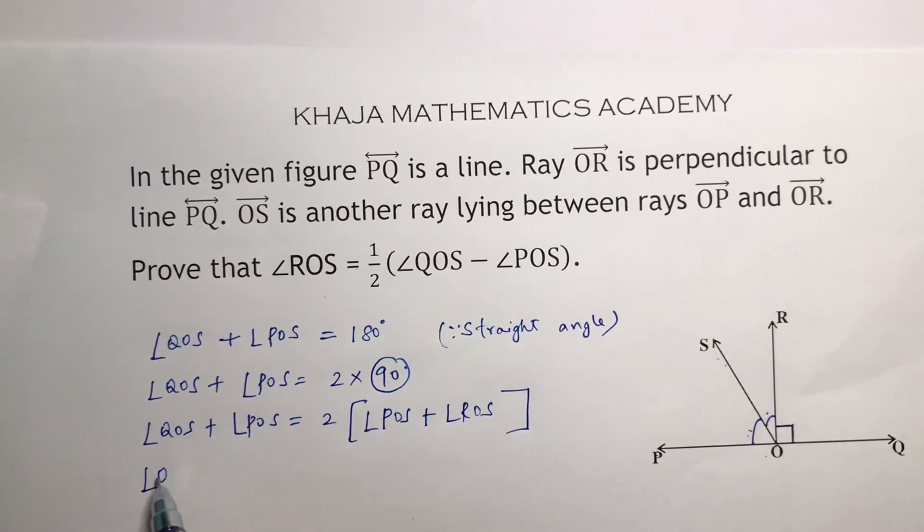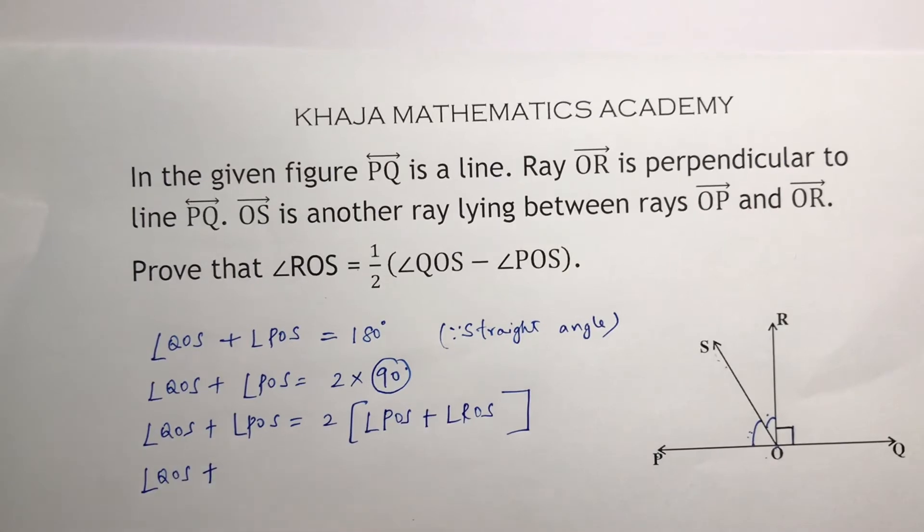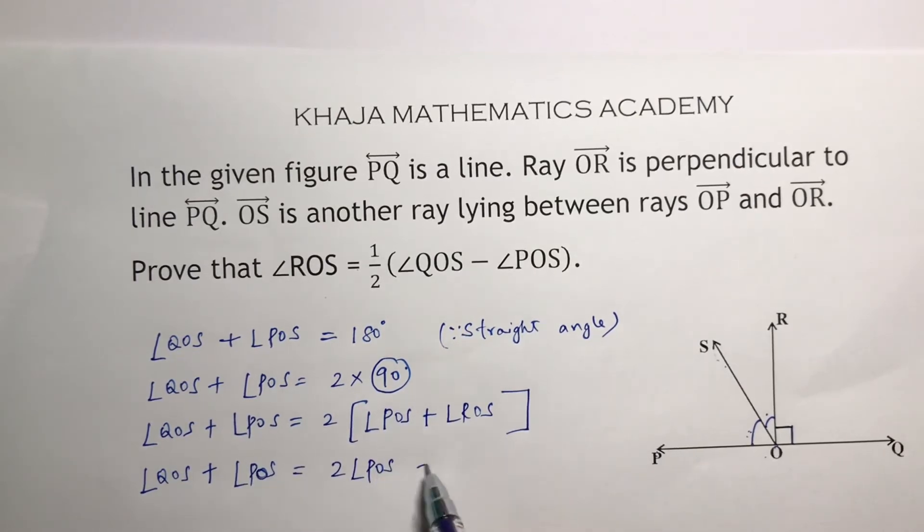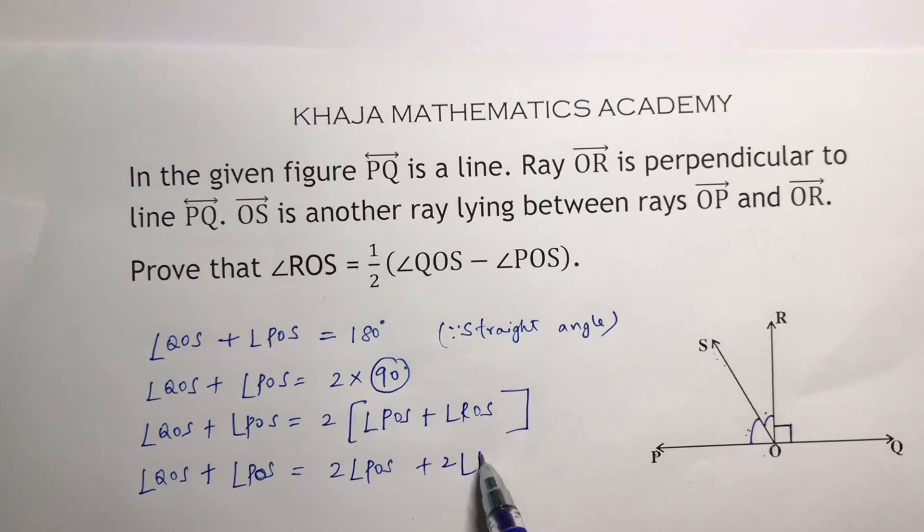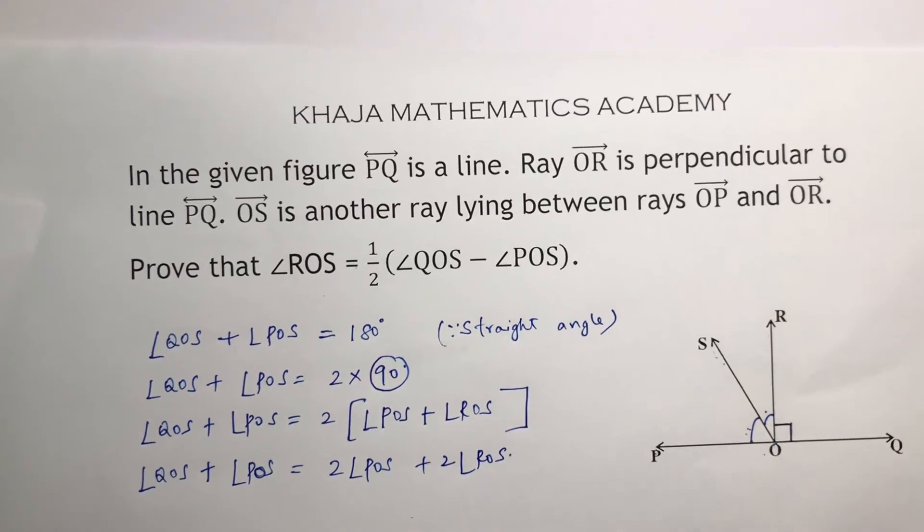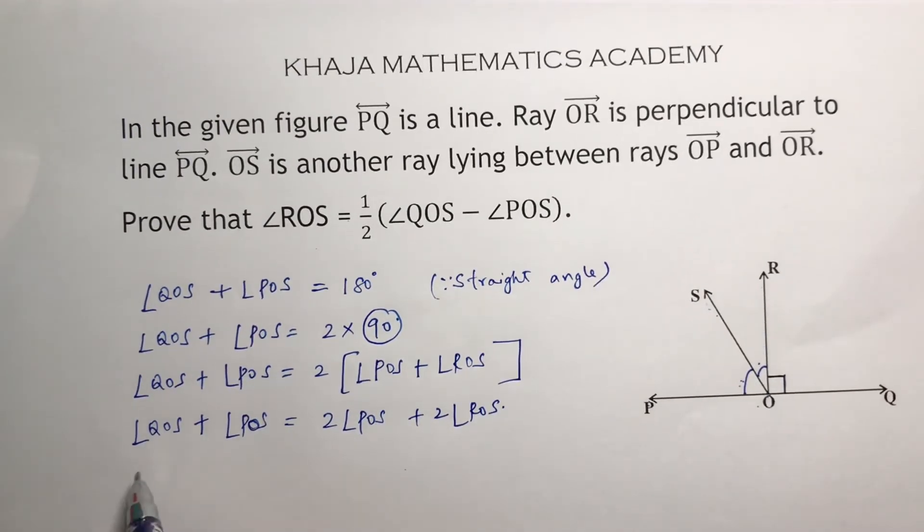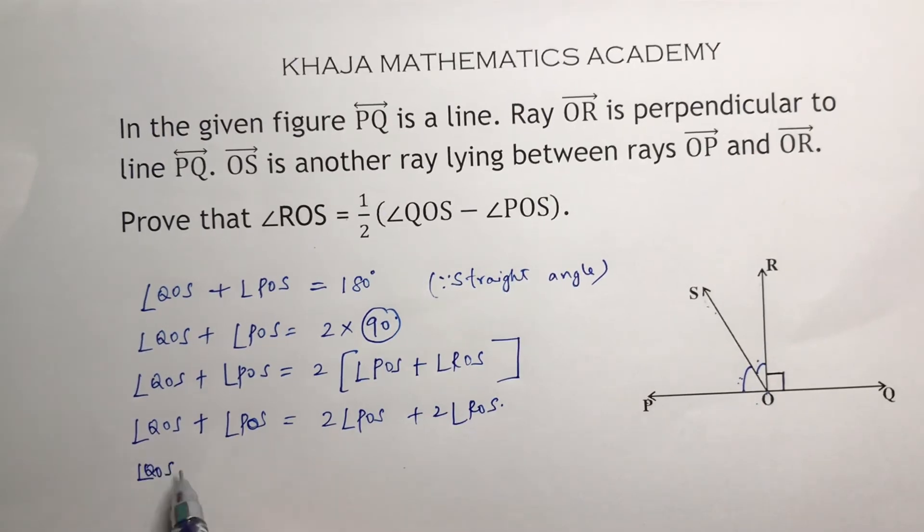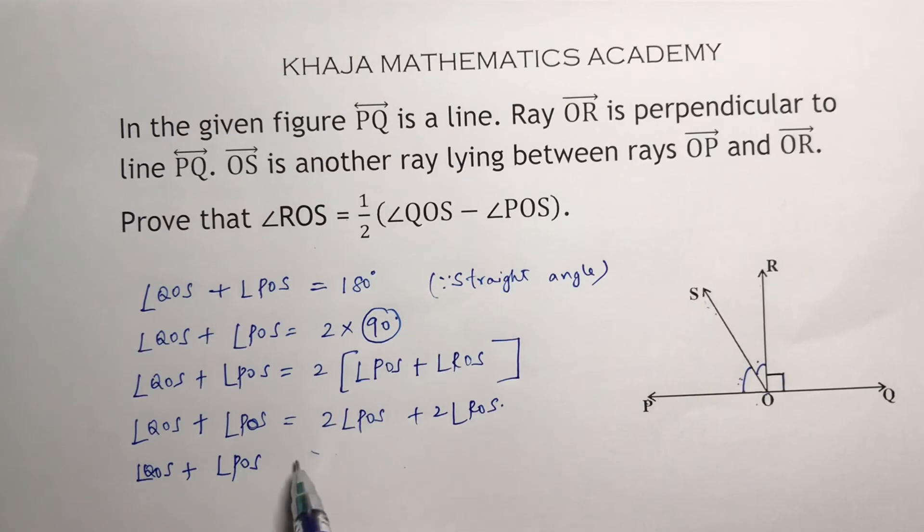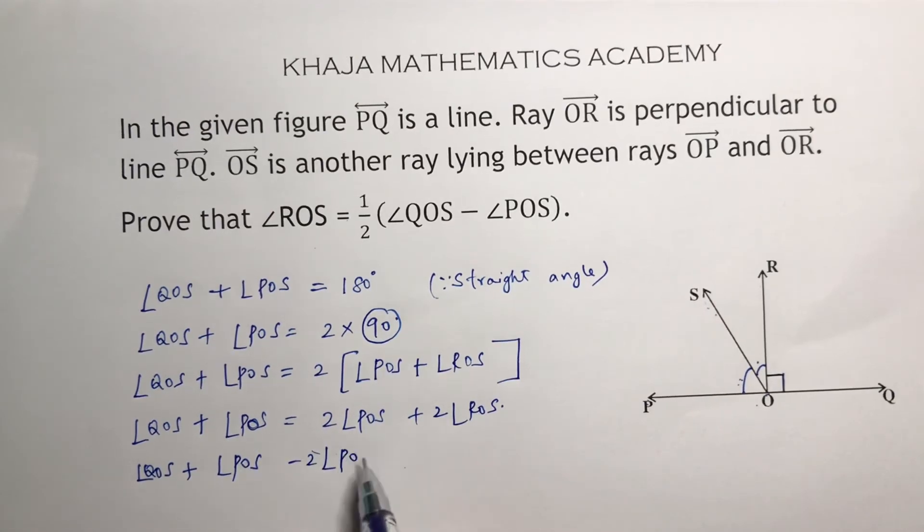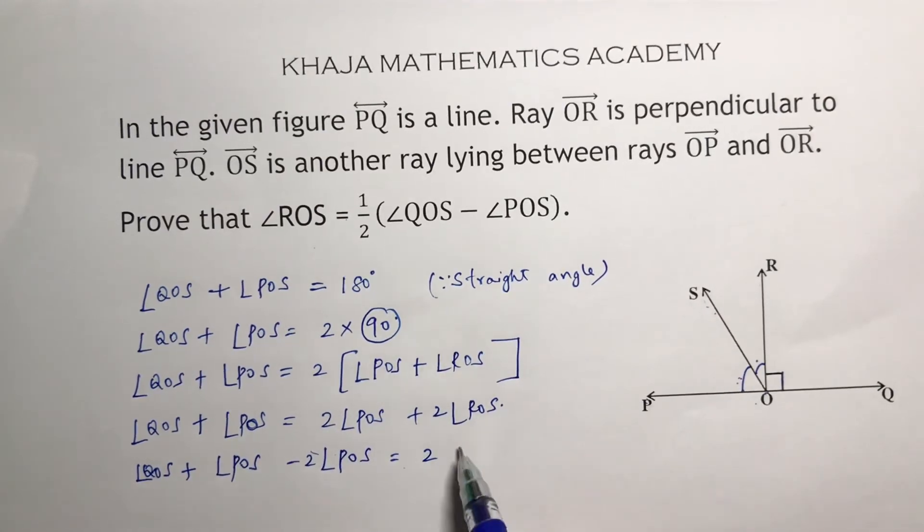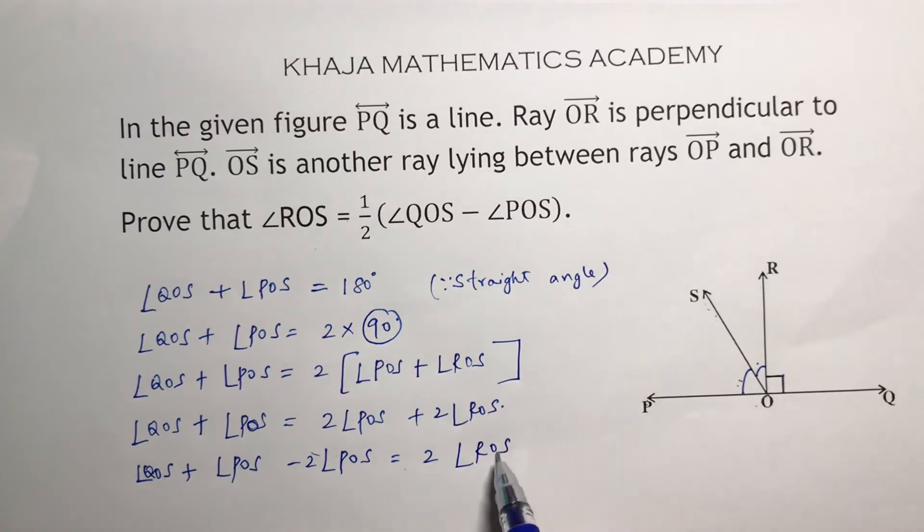Now QOS plus angle POS equals 2 times angle POS plus 2 times angle ROS. Now QOS plus angle POS minus angle POS is 2 times ROS.